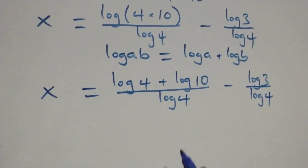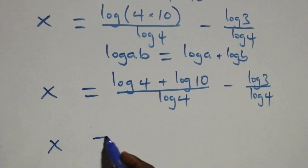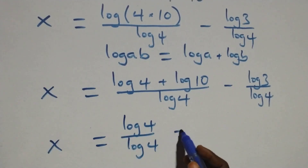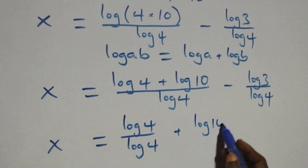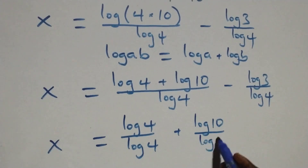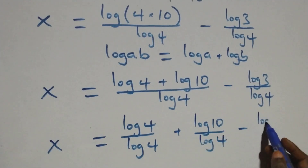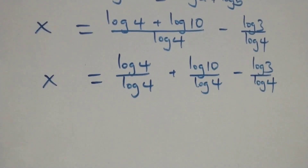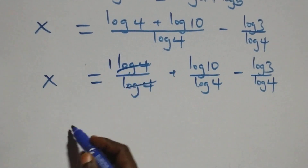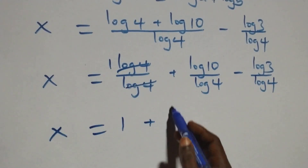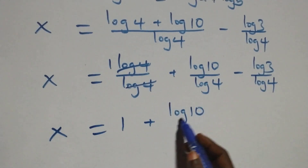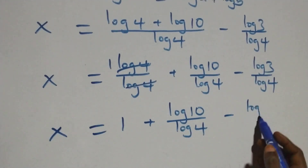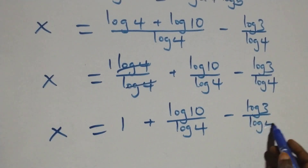Then we separate this into two fractions, and this becomes x equals to log 4 over log 4, plus log 10 over log 4, minus log 3 over log 4. Which implies log 4 cancels each other, we have 1 left. So x equals to 1 plus log 10 over log 4, minus log 3 over log 4.